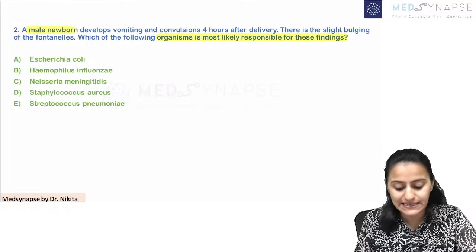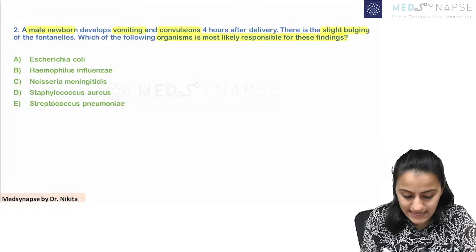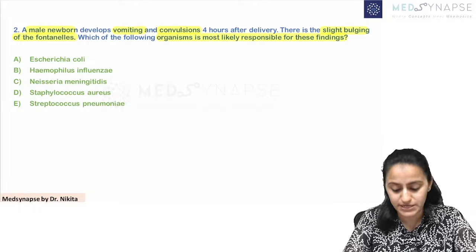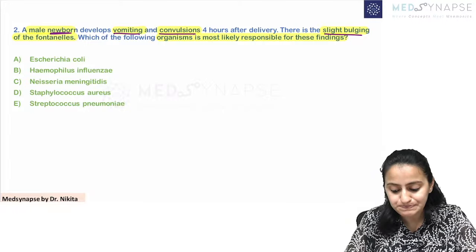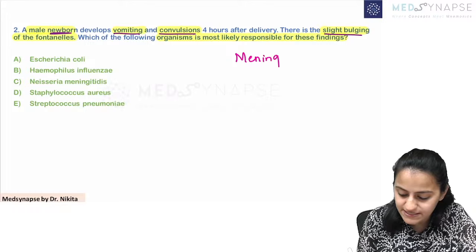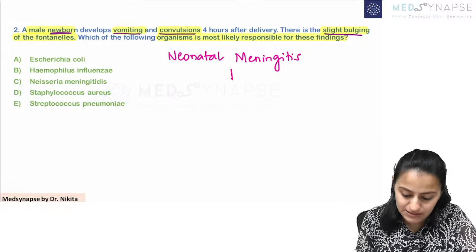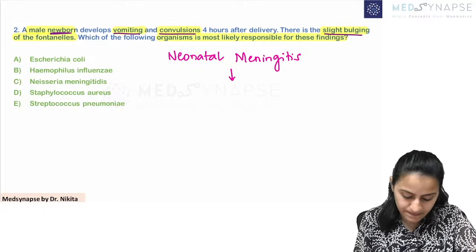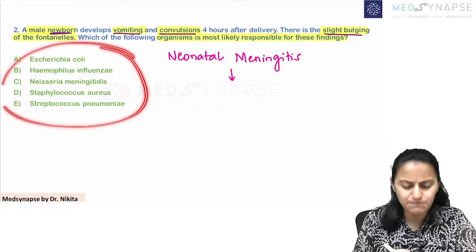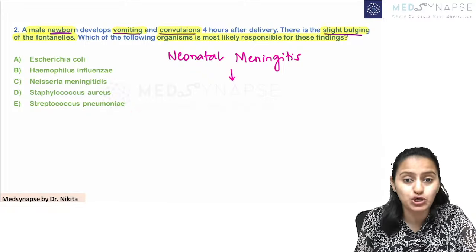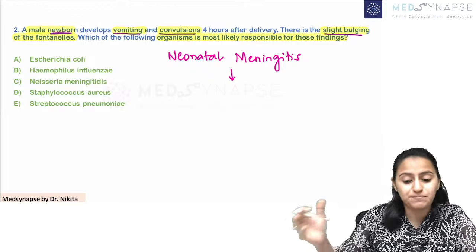The question: a male newborn presenting with vomiting and convulsions four hours after delivery, with slight bulging of the fontanels. When you have a newborn with vomiting, convulsions, and bulging fontanels, you are thinking about meningitis — specifically neonatal meningitis. What organisms are important here? Group B Streptococcus is one important organism — but do you have Group B Streptococcus in the options? Streptococcus pneumoniae is not Group B Streptococcus — it's alpha-hemolytic, not beta-hemolytic.